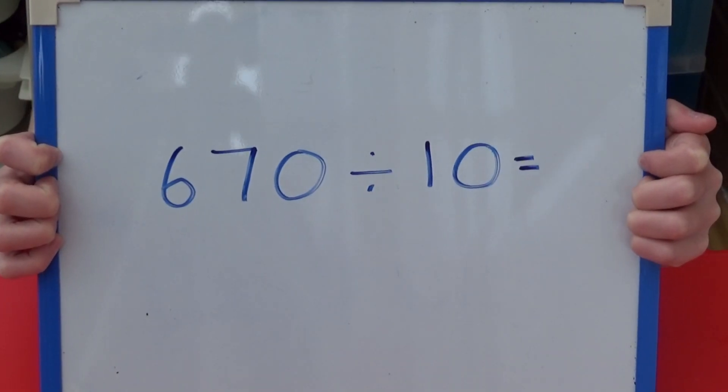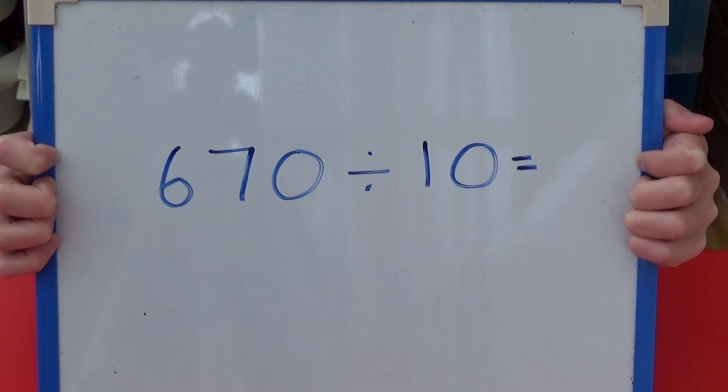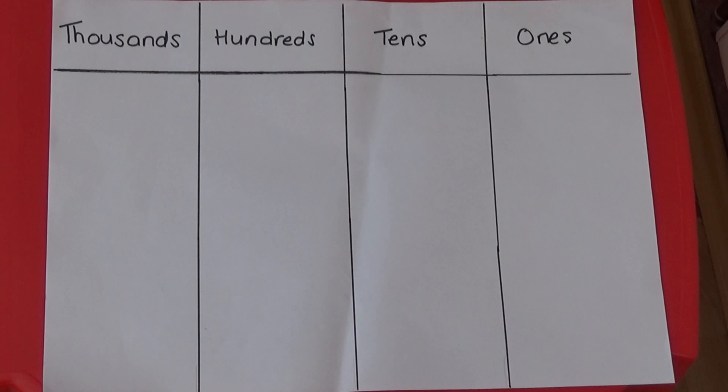Let's start by looking at how to divide 670 by 10. I'm going to partition 670 into hundreds, tens and ones. 6 is 600, so I'm going to stick 6 in the hundreds column. 7 is 7 tens, so I'm going to stick 7 in the tens column. And I'm going to stick 0 in the ones column.